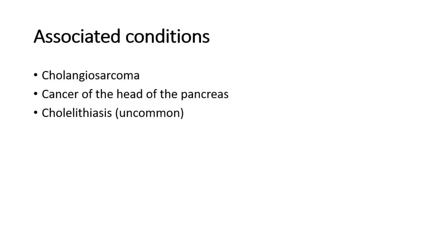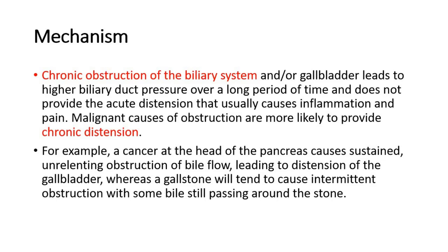For its mechanism, chronic obstruction of the biliary system or gallbladder leads to higher biliary duct pressure over a long period of time, and does not provide the acute distension that usually causes inflammation and pain. Malignant causes of obstruction are more likely to provide chronic distension. For example, a cancer at the head of the pancreas causes sustained, unrelenting obstruction of bile flow, leading to distension of the gallbladder, whereas a gallstone will tend to cause intermittent obstruction with some bile still passing around the stone.